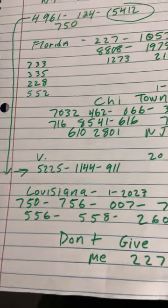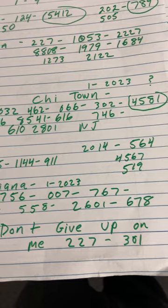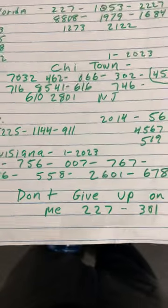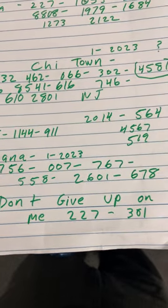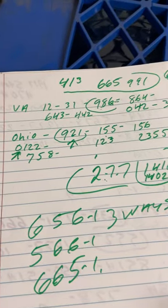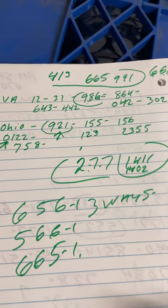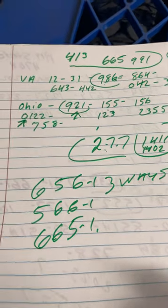Louisiana, right here still: 558-007-2601. I don't need to show you that. Don't give up on me. 227-301. We have VA still from last week. What's going on? 661-991-302.